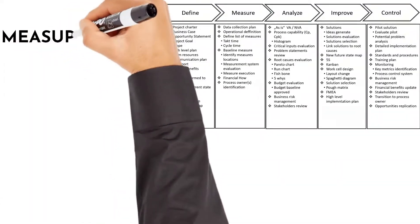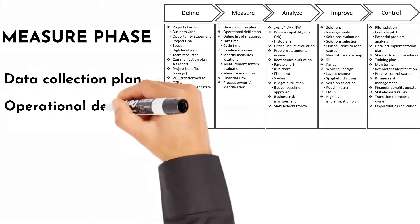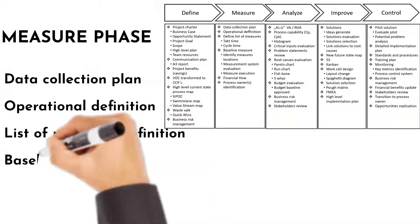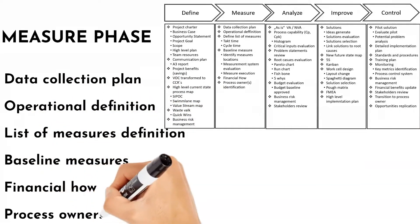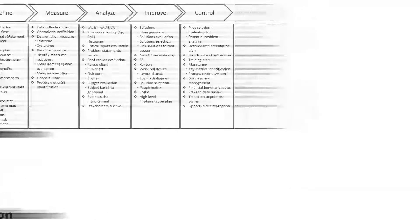In the Measure phase, main tools are: data collection plan, operational definition, list of measures definition, baseline measures, financial flow and process owner identification.